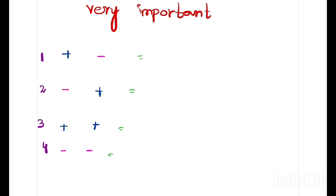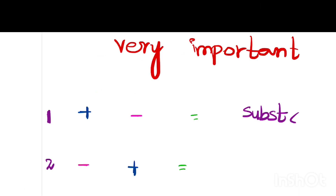It's not always easy to use a number line, so let's understand solving integers without a number line. If we have one positive number and one negative number — or one negative and one positive — we will always subtract them.